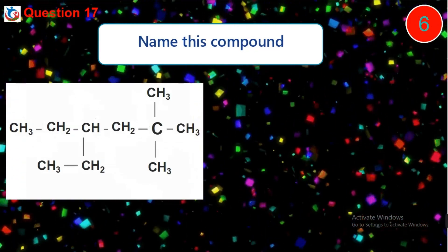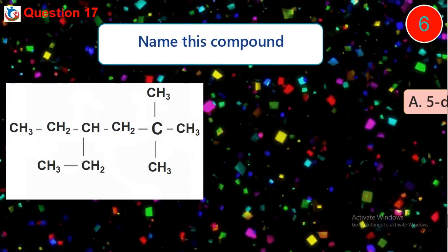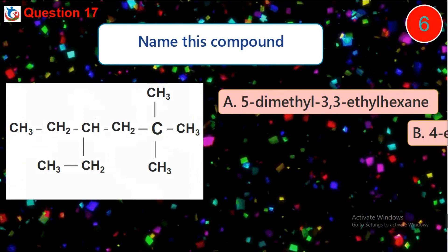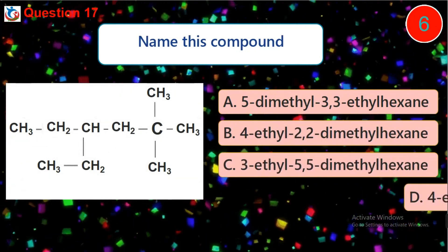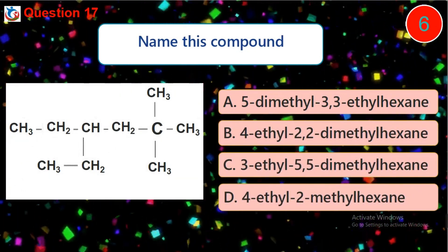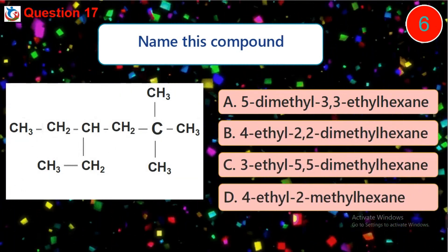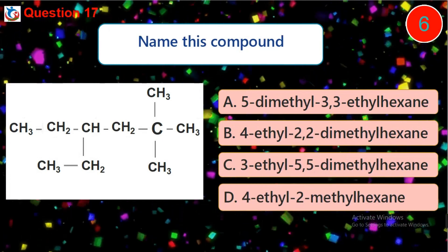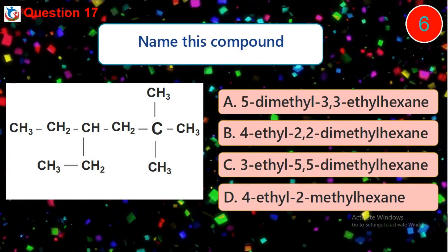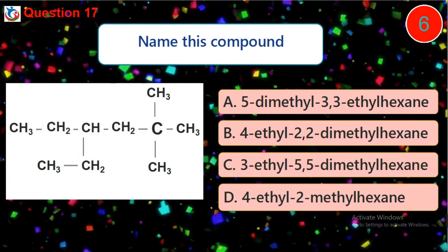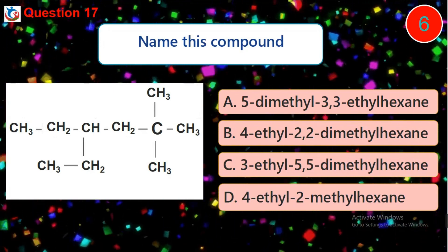Question 17. Name this compound. A. 5,5-dimethyl-3-ethyl-hexane. B. 4-ethyl-2,2-dimethyl-hexane. C. 3-ethyl-5,5-dimethyl-hexane. D. 4-ethyl-2-methyl-pentane.